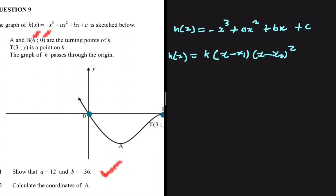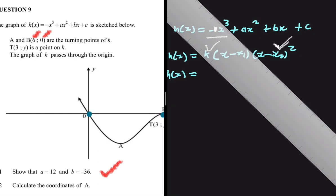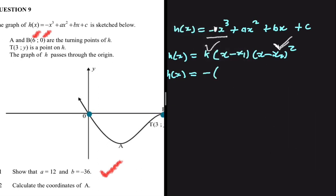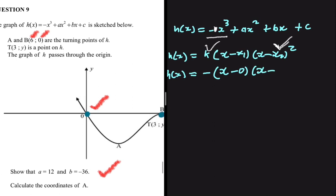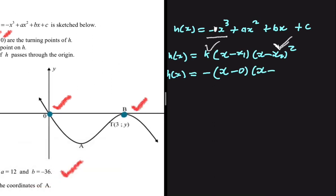Since one root is repeated at a turning point, we use h(x) equals k multiplied by (x minus x1) multiplied by (x minus x2) squared, where the squared x-value is at the turning point. From our equation, k equals minus 1. So x1 equals zero and x2 equals six, giving us h(x) equals minus x times (x minus 6) squared.